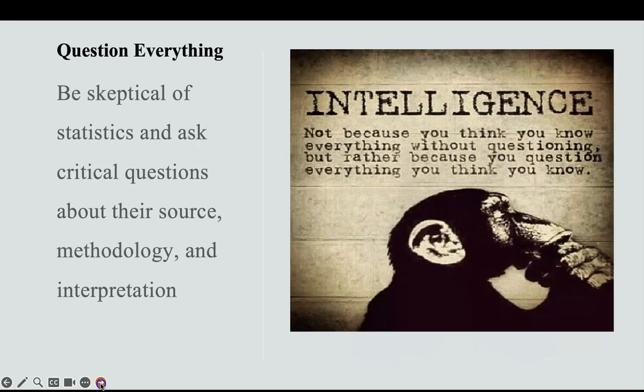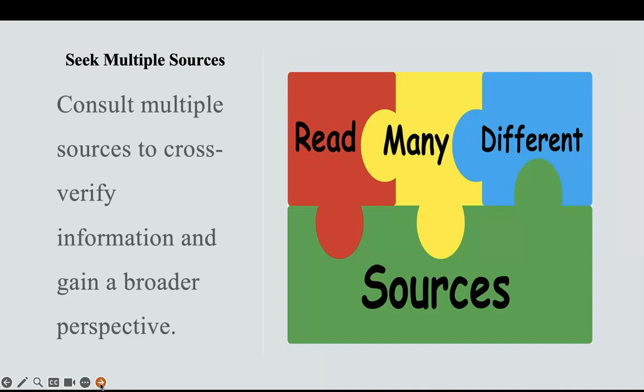To avoid being misled by numbers, question everything. Be skeptical of statistics and ask critical questions about their sources, methodology, and interpretation. The picture shows an ape with the word 'intelligent' — not because you think you know everything without questioning, but because you question everything you think you know. Seek multiple sources, consult them to cross-verify information and gain a broader perspective. Triangulate the information to come out with stronger facts.